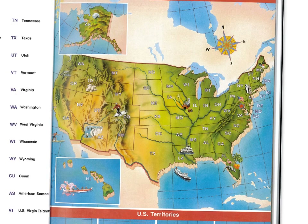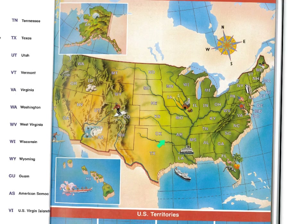We're looking at the United States. You'll see here the west coast: California, Oregon, Washington. You'll see the south and southwest: again California, Arizona, New Mexico, Texas. Up here we have Idaho, Montana, Wyoming, Colorado, Utah, Nevada, New Mexico, Oklahoma, Kansas.